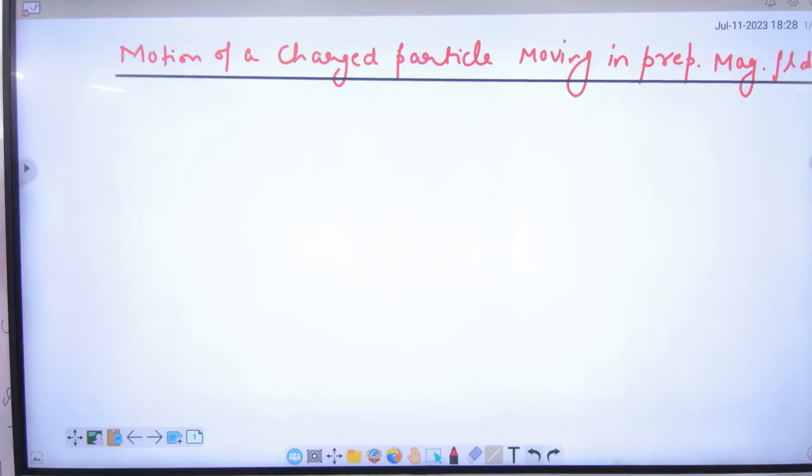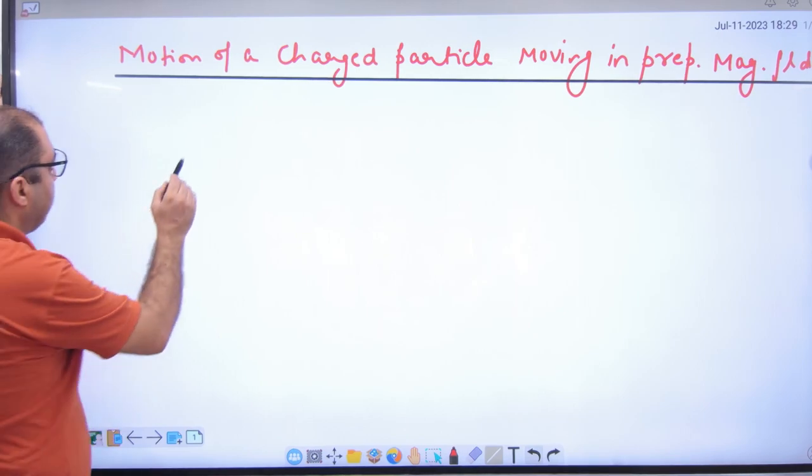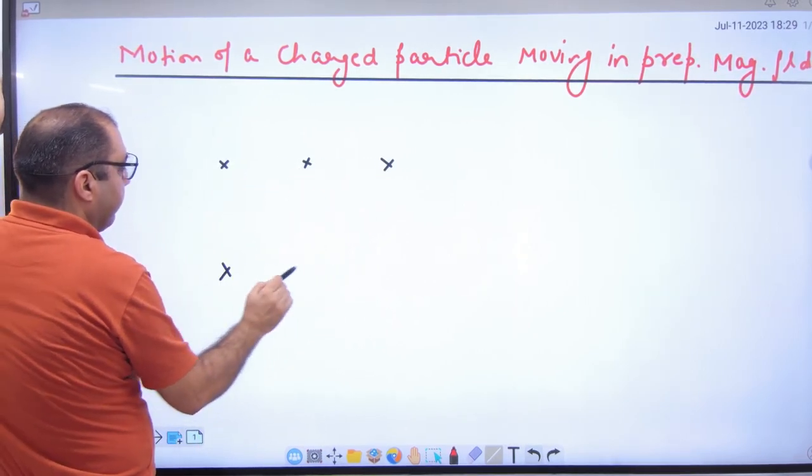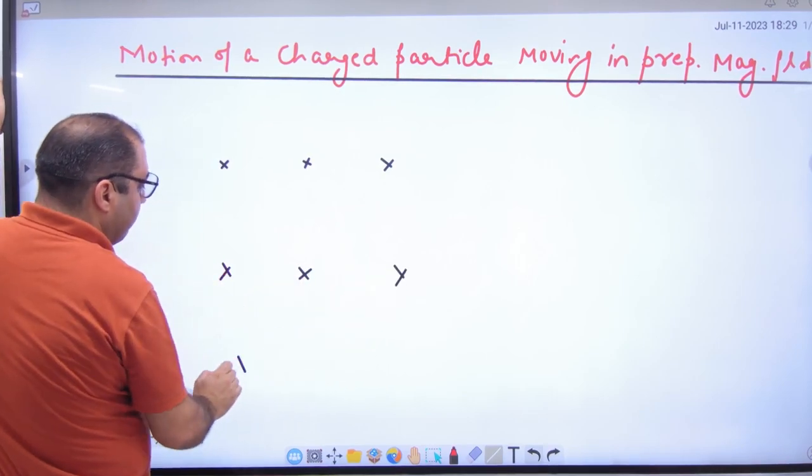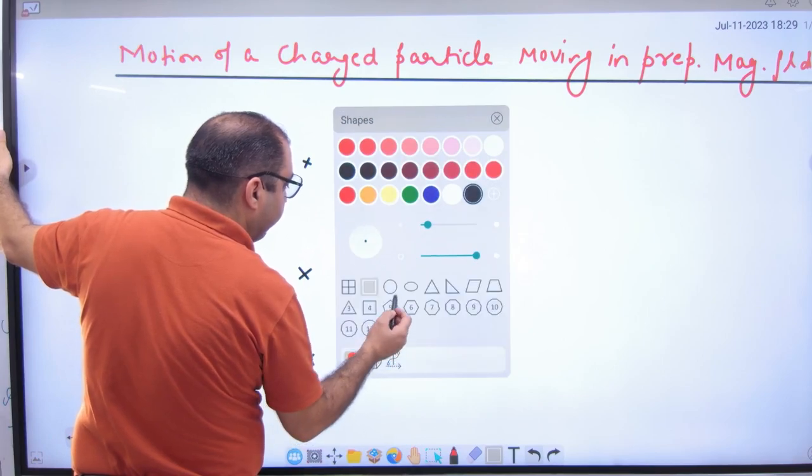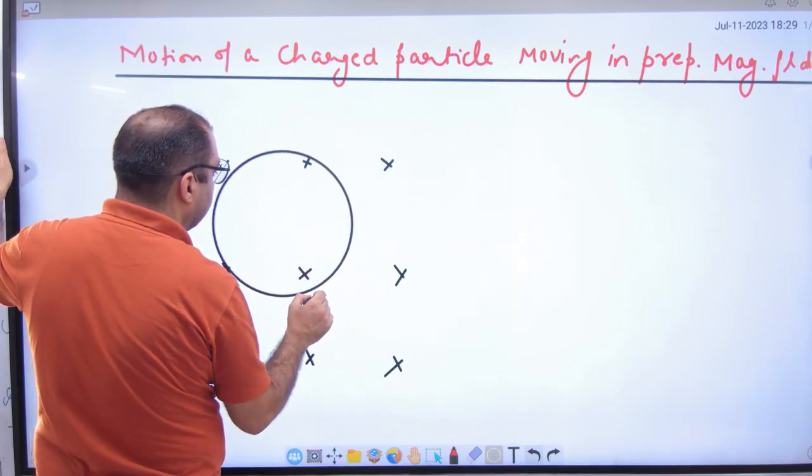Motion of a charged particle moving in a perpendicular magnetic field. We have discussed that if you have a magnetic field and any charged particle moves in the perpendicular magnetic field, then how does it move? In a circle.